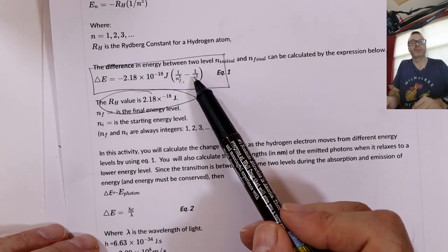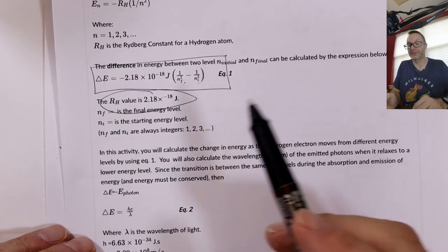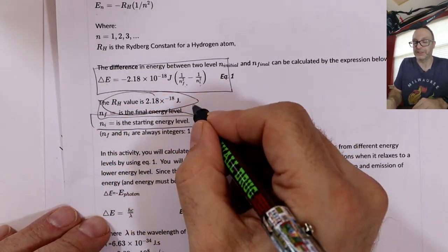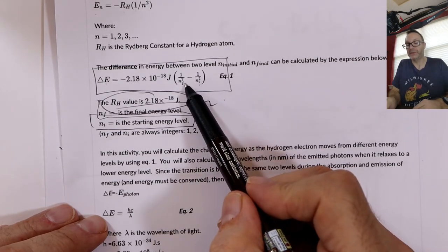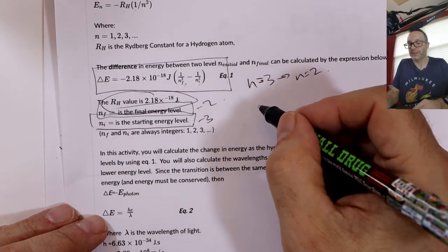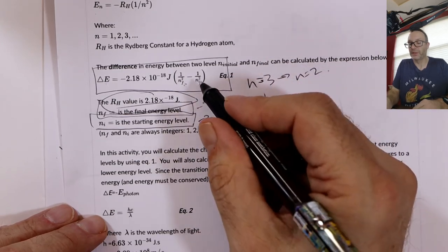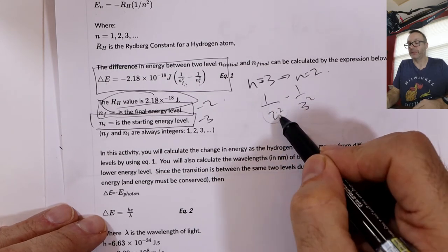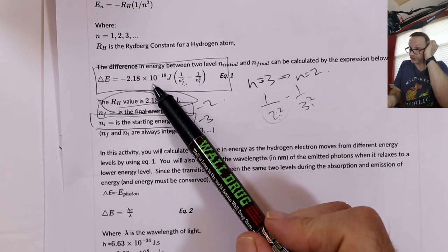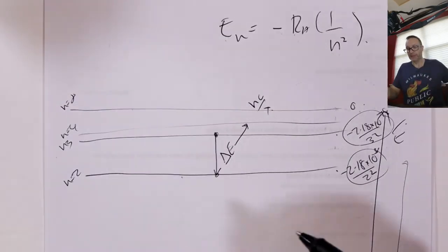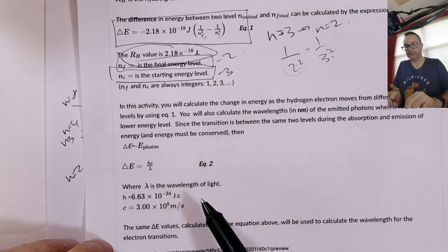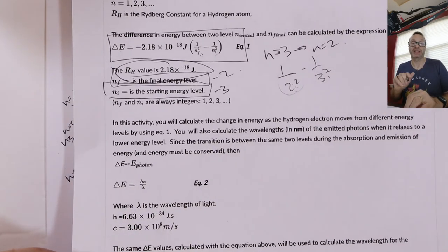For example, going from n=3 to n=2, you use 1/2² minus 1/3², which is a quarter minus a ninth — a positive number. We use this equation to find the actual energy distance between the layers, then since ΔE = hc/λ, you rearrange to find the wavelength in meters and convert to nanometers.